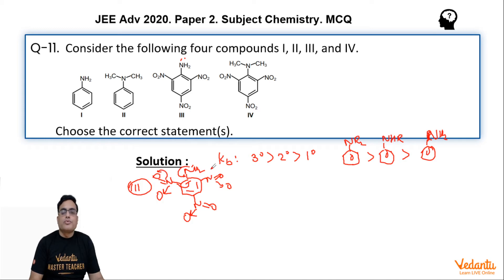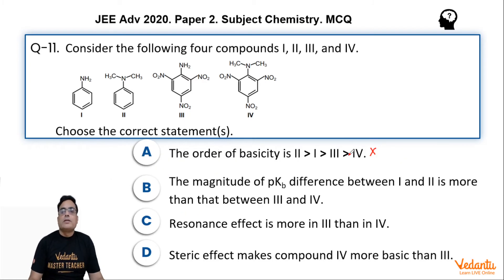this third compound must be least basic. But in our option A, this third compound they are showing that it is more basic than fourth, which is wrong. So option A is not the possible answer.